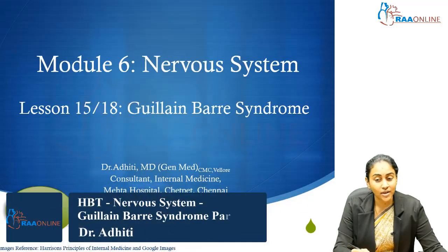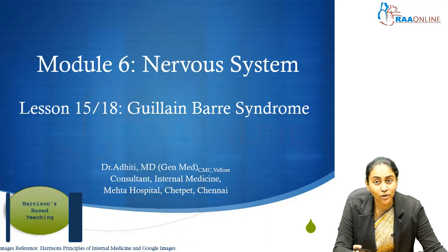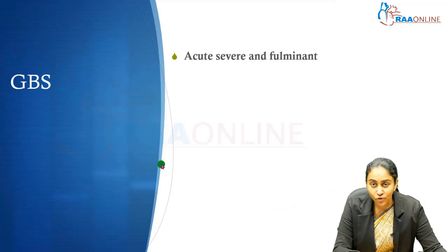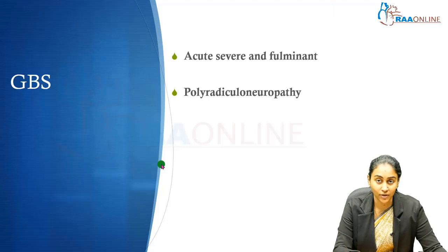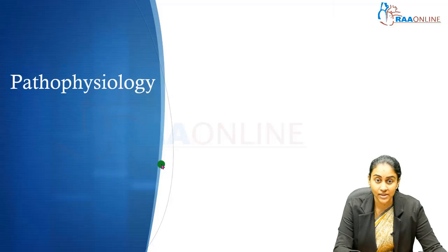Hello everyone, welcome to RAO online. In this session, we are going to learn about a very interesting syndrome — one of the primary neurological disorders which actually brings the patient directly to the emergency department — which is Guillain-Barré syndrome. Guillain-Barré syndrome is an acute, severe, and fulminant polyradicular neuropathy with an autoimmune basis, which is more common amongst adults than children. The risk for Guillain-Barré syndrome is also greater among males as opposed to females.